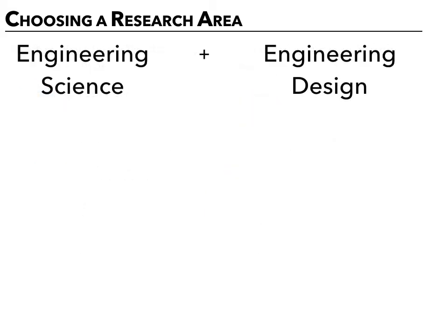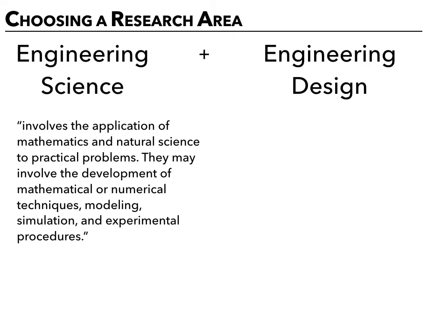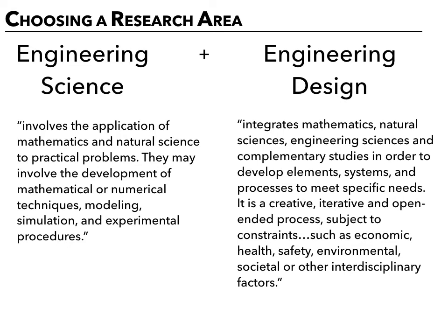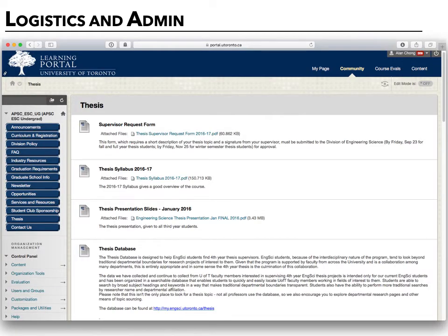Engineering science involves the application of mathematics and natural science to practical problems. Engineering design involves the integration of mathematics, natural sciences, engineering sciences, and complementary studies in order to develop elements, systems, and processes to meet specific needs. You can tell by these two definitions that they're actually pretty wide-ranging, so it's going to be relatively easy to set up a project in your interest area that addresses at least one of these two categories.